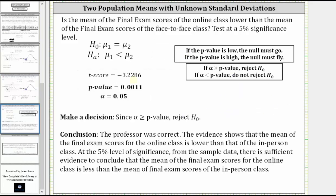Now comparing the p-value and alpha, notice how the p-value is small or lower than alpha. If the p-value is low, the null must go. Or more formally, because the p-value is less than or equal to alpha, we reject the null hypothesis.